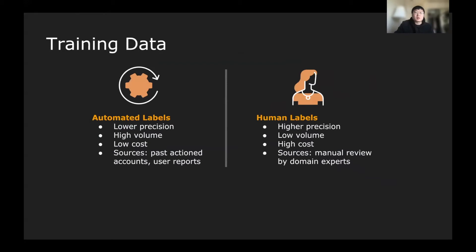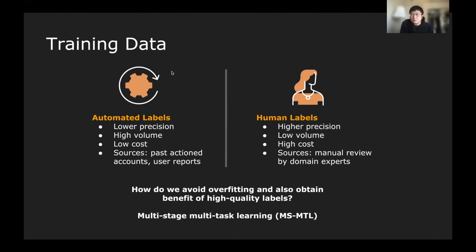Moving on to the training data part. There are two types of labels used in the Facebook environment training. One is low-precision, high-volume, low-cost automated labels. The sources from those labels are normally coming from past action accounts and user reports. The second type of label is human label. They're almost the opposite from the automated labels. They're much higher in precision. They're much lower in volume. Of course, it's extremely expensive to generate them because they involve the human label from the domain experts. The question here is, how do we avoid overfitting and also obtain the benefit of the high-quality labels?